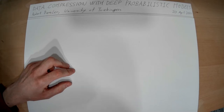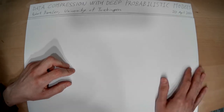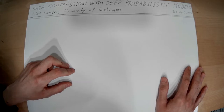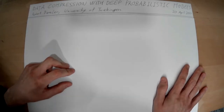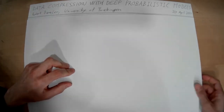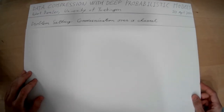If you haven't seen the last video, click on the link to the playlist in the video description and it will take you right there. Today we're going to see our first class of very simple compression methods, which are called symbol codes. But before that, I want to clarify the problem setting, and this will be the problem setting that we'll be discussing throughout the entire course — the problem of communication over a channel.